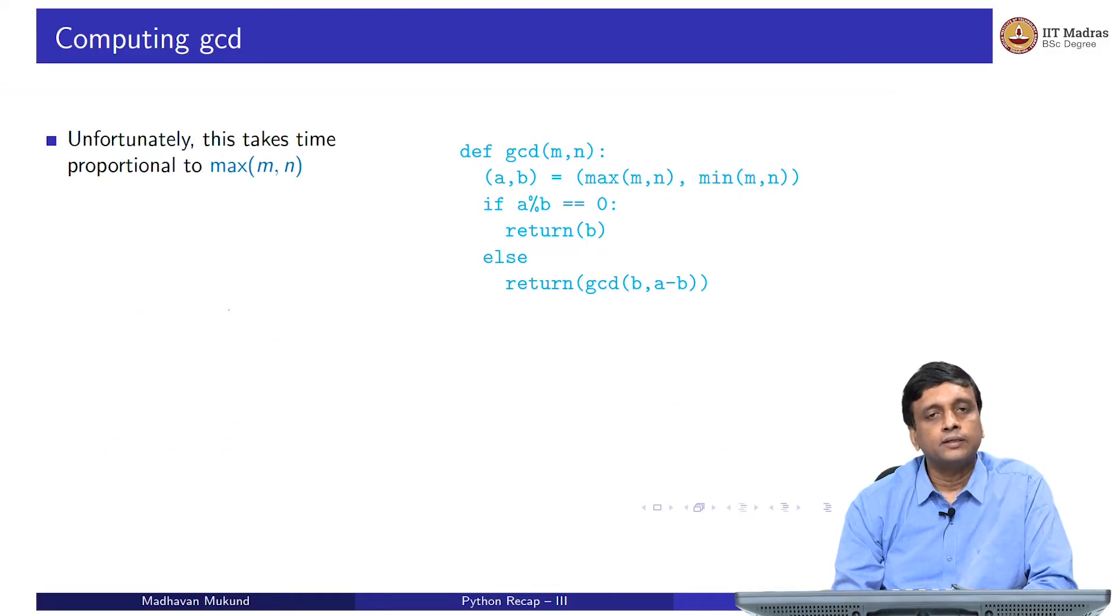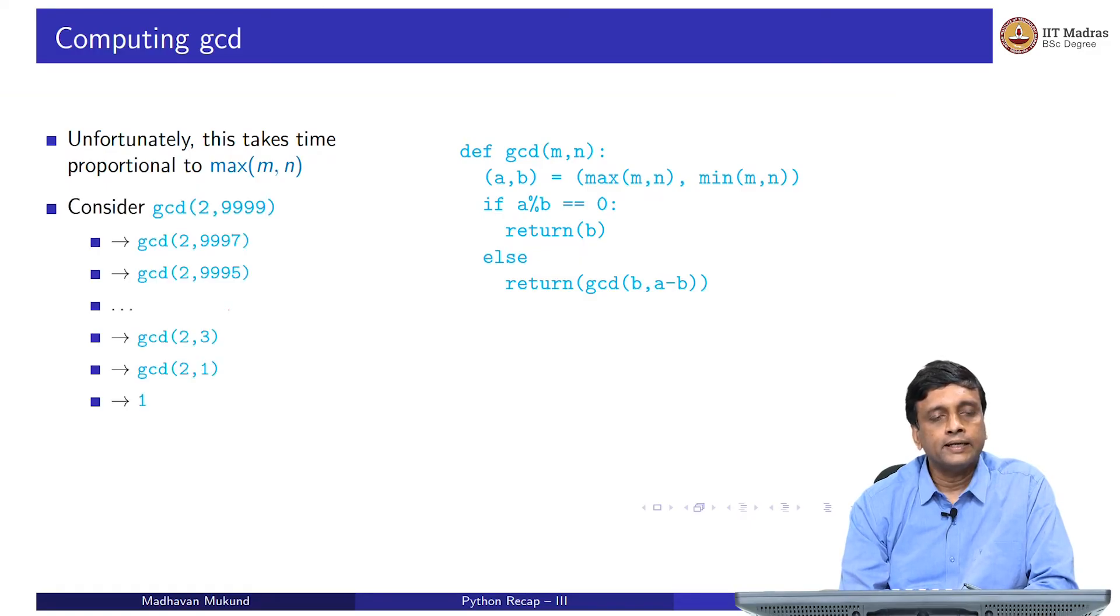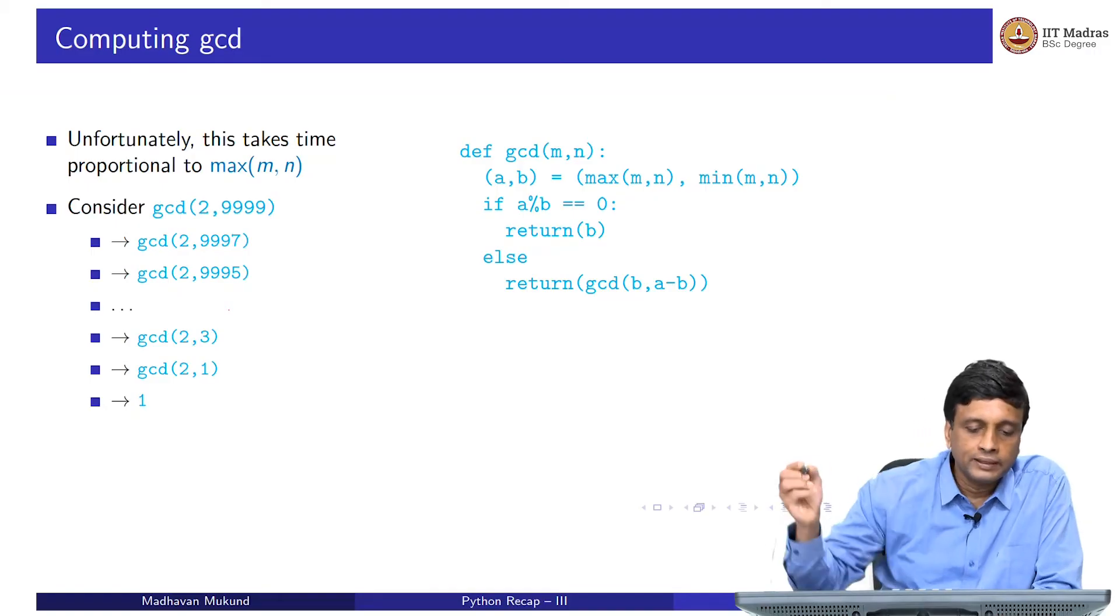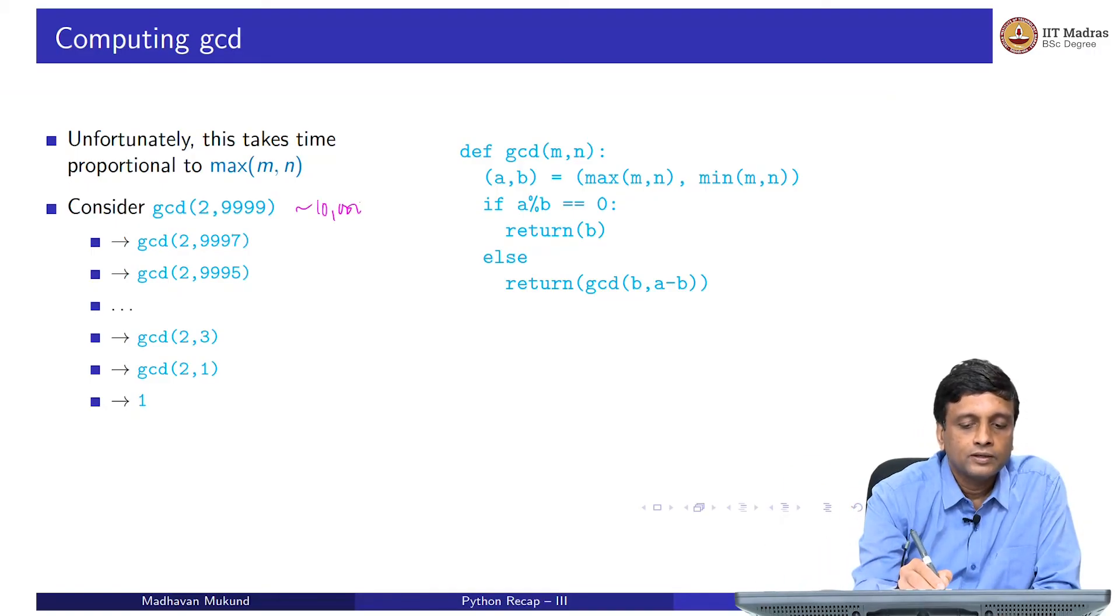Now, the problem with this is actually that this does not solve our original problem. Our original problem was when we were computing this list of factors, it was taking time proportional to the minimum of m and n. Now, here actually is going to be a little worse - it's going to be time proportional to the maximum of m and n. To understand this, let us look at an example. Supposing I take the GCD of 2 and some large odd number, then as we saw, b is going to be 2 and a minus b is going to be the large odd number minus 2. 9999 is going to reduce to 9997. That is going to reduce by 2 to 9995. I am going to keep doing this approximately - I am reducing by 2. This is approximately 10,000, the second number. If I keep reducing by 2, after about 5000 steps, I will come down to 2 comma 3.